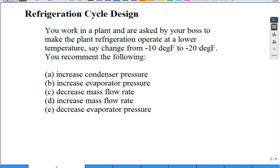You work in another plant, and you have another boss, and you're asked by the boss to make the plant operate at a lower temperature. Say that it works fine at negative 10 degrees F, but they really want that walk-in freezer to be negative 20 degrees F. You recommend what of the following to decrease that temperature to make it go colder?